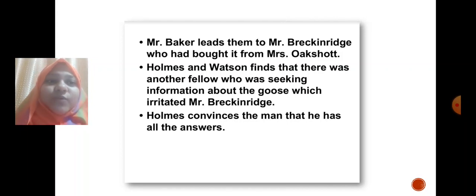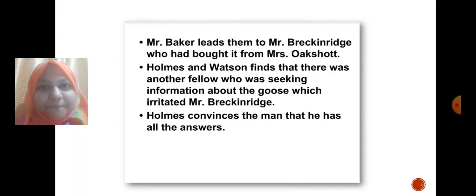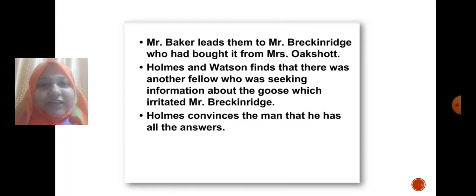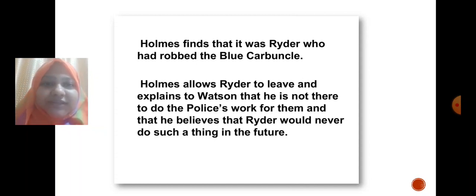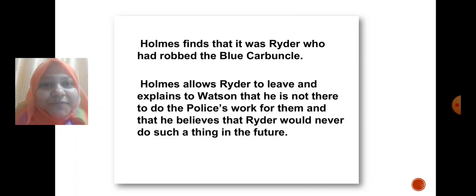Holmes convinces that persistent man that he has all the answers. They finally reach the person who was so interested in knowing about the goose and somehow convince him to give them all the information he has. Holmes finds that this man is Ryder — the same person who worked at Hotel Cosmopolitan and who put all the blame on the plumber who visited the Countess of Morcar's room. But Ryder was the actual thief.